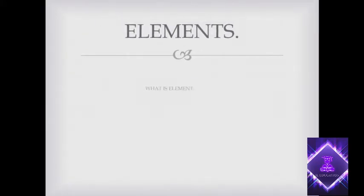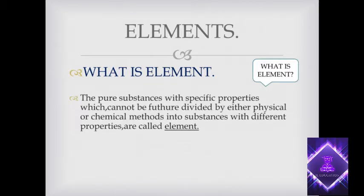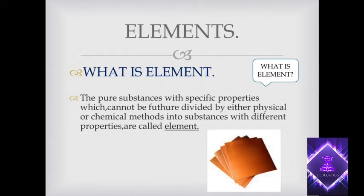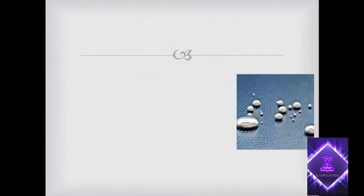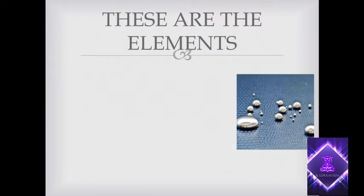What is an element? Pure substances with specific properties which cannot be further divided by either physical or chemical methods into substances with different properties are called elements. Examples include zinc, copper, and silver.